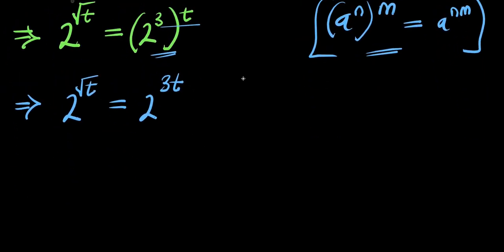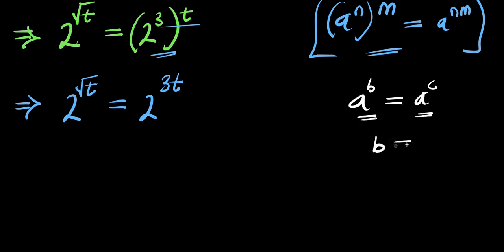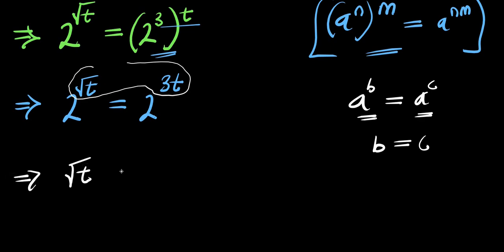Now the next step will be for us to consider this identity again. If you have a to the power of b and this equals a to the power of c, considering the fact that the bases are the same, we compare the exponents. We have b equals c. So we are going to compare this exponent. That means we are going to have root t equals 3t.